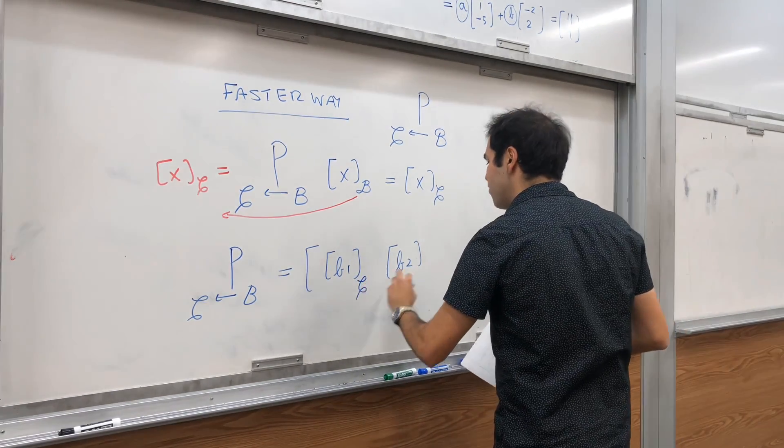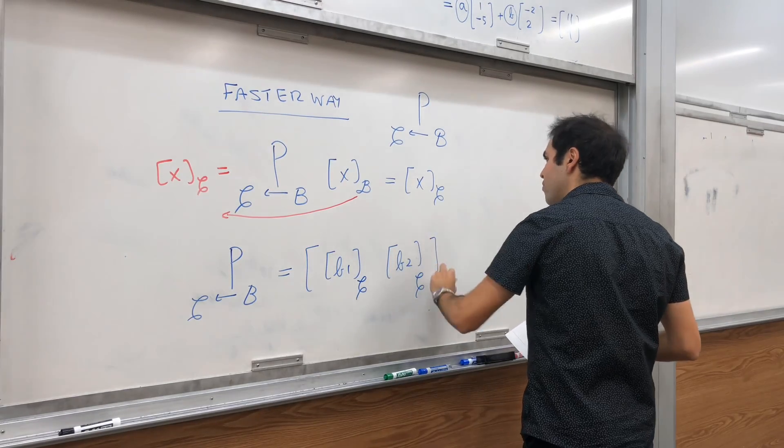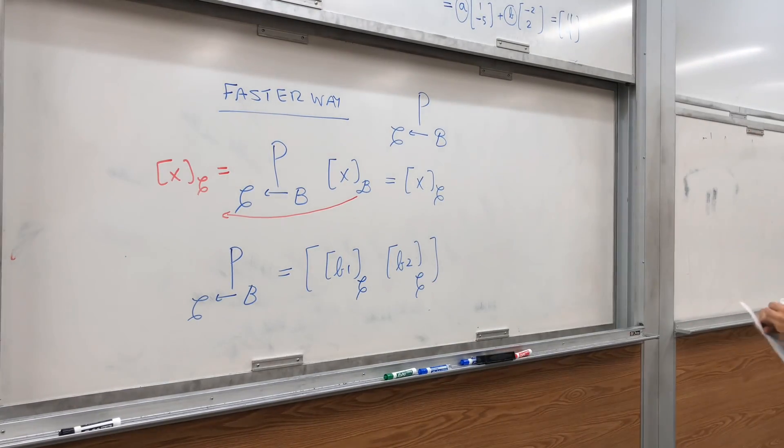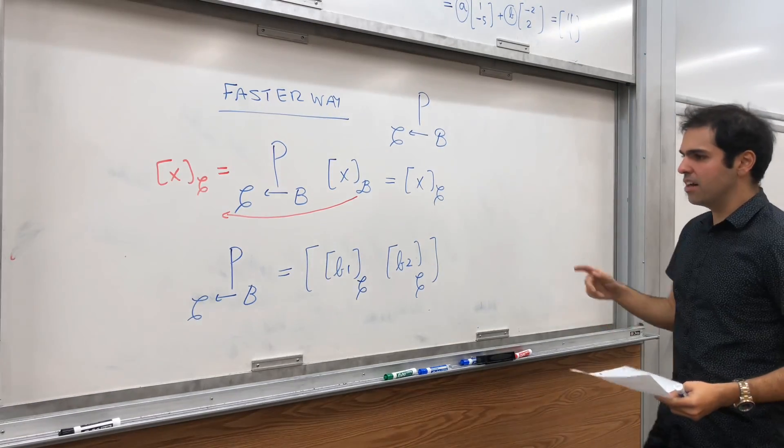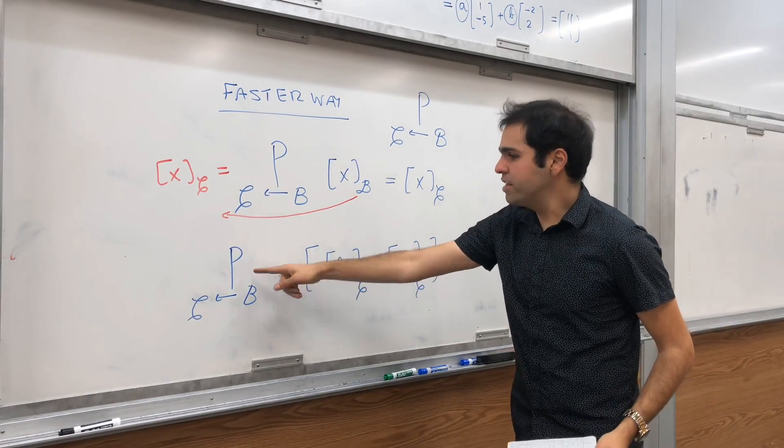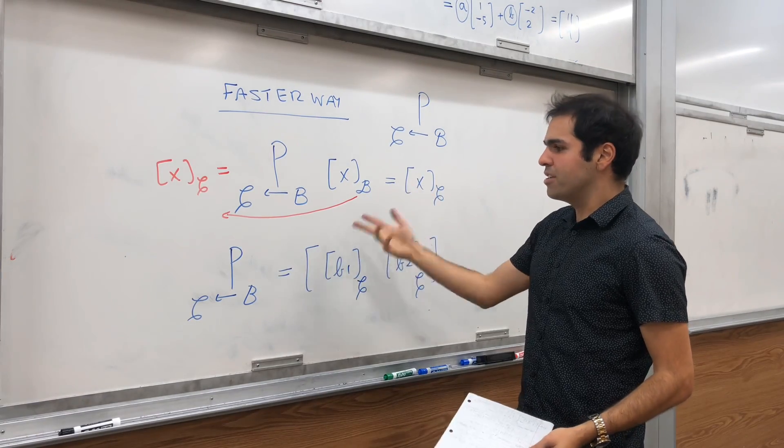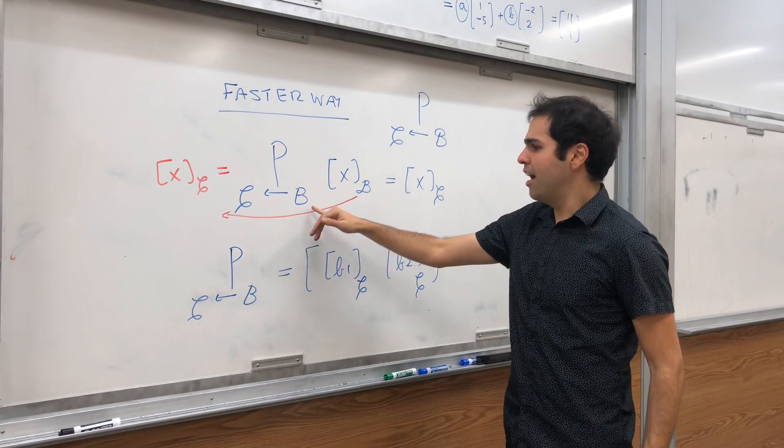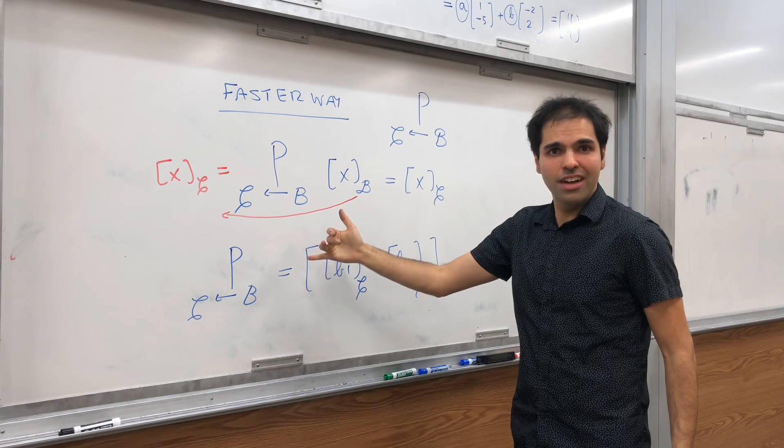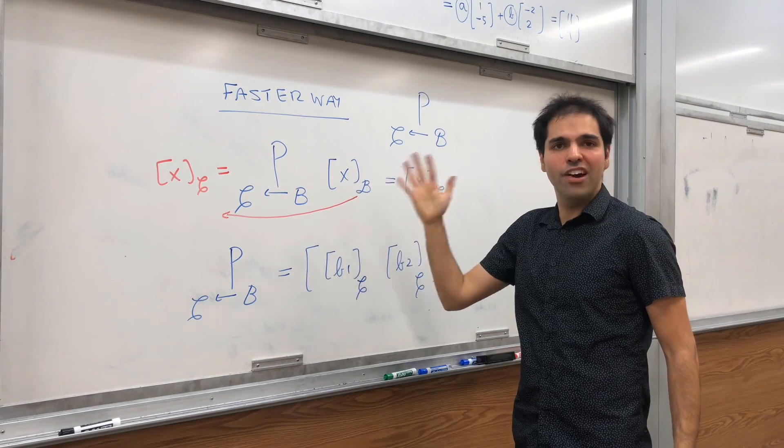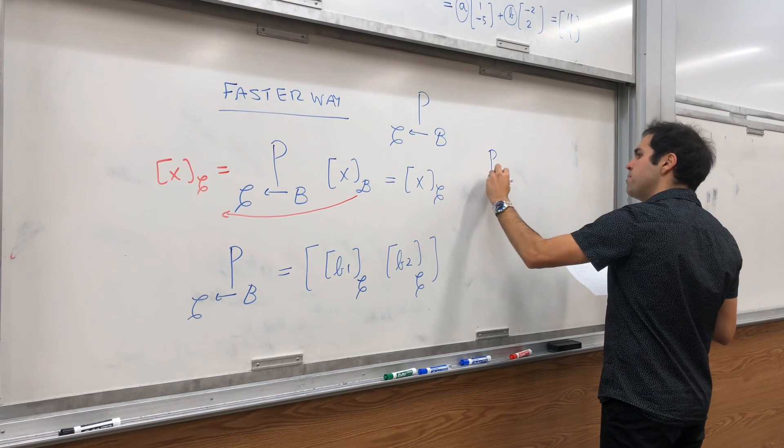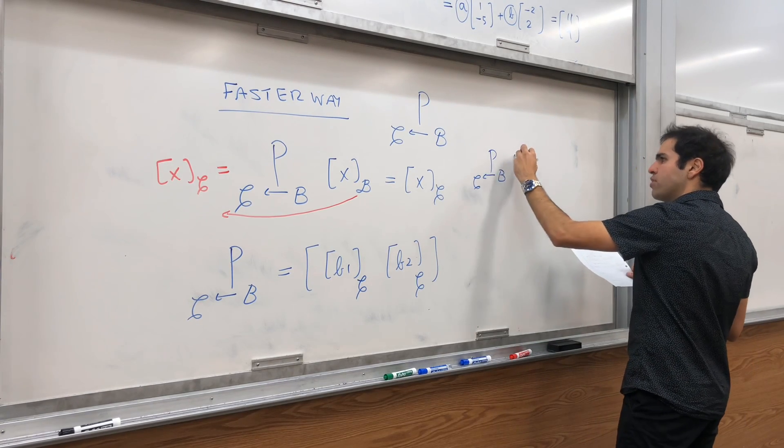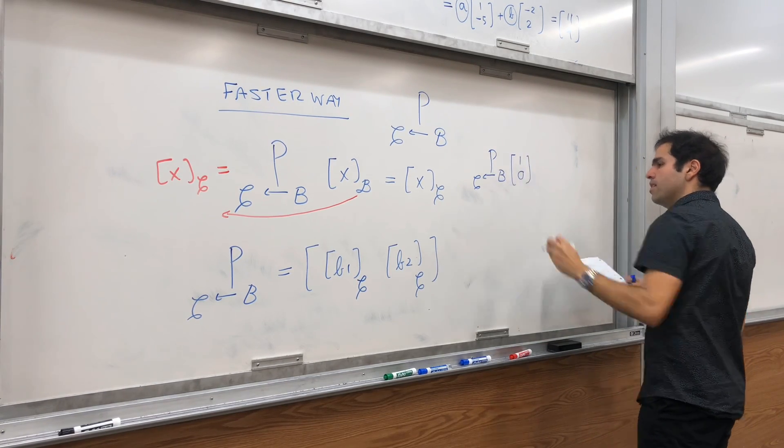So you take the old vectors, and you scan them with the new coordinates. And I think this makes sense, because if you take, how do you find a matrix? You just figure out what it does to 1, 0, and 0, 1. Of course, you apply P, B, C to the vector 1, 0.